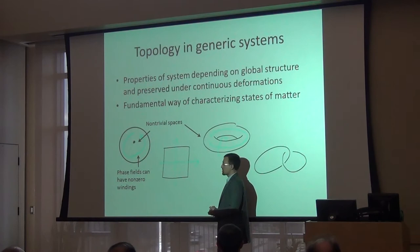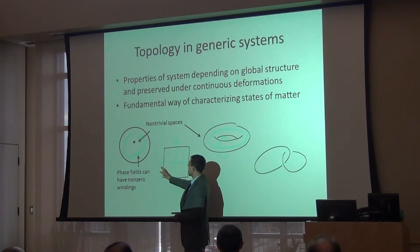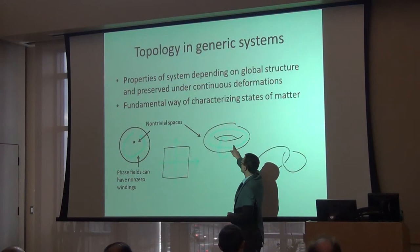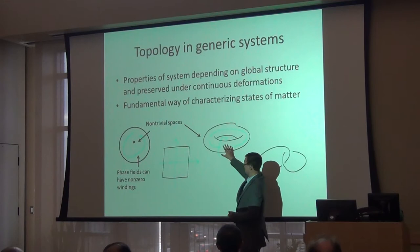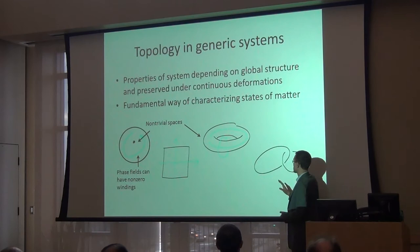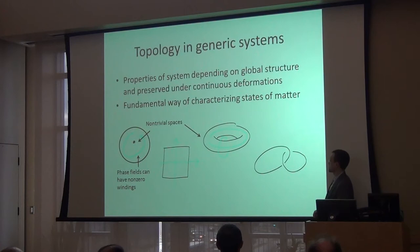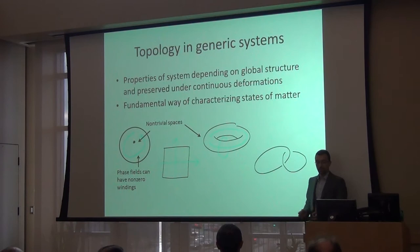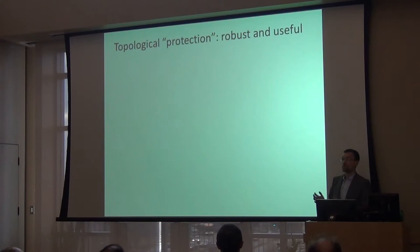Even without a hole, if we assume periodic boundary conditions, a rectangle becomes the surface of a torus, and we can talk about the winding of a field around each of its two axes. These two components give us two components of a vector we call the topological polarization. For mechanical systems, our field can just be a solid object — I can talk about the winding of one loop around another. That gives us a very intuitive definition of topological protection and how it can be robust and useful.